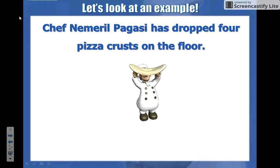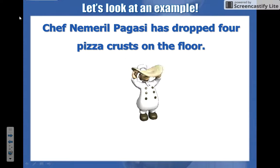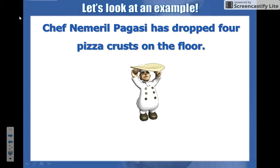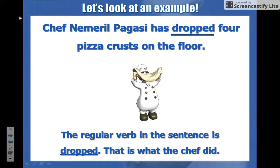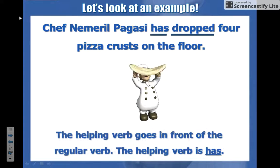Let's do one more and then we'll move on to linking verbs. 'Chef Nermil Vigasi has dropped four pizza crusts on the floor.' Looking for our action verb, which is 'dropped.' I ask myself, does a word right next to it help it? Is it on my list? It is — it's 'has.' So 'has' is our helping verb.